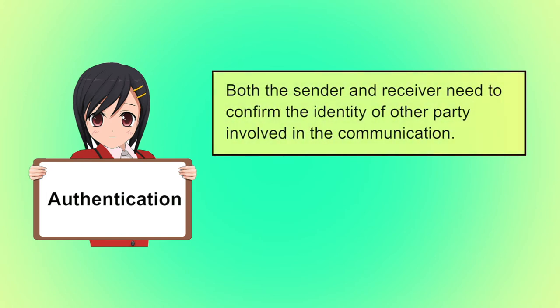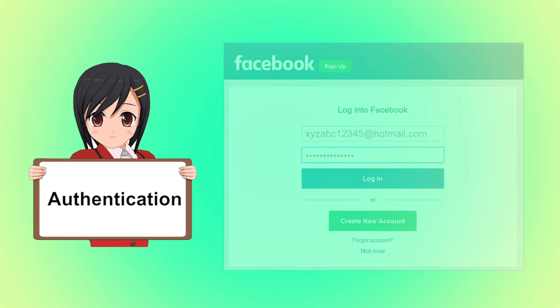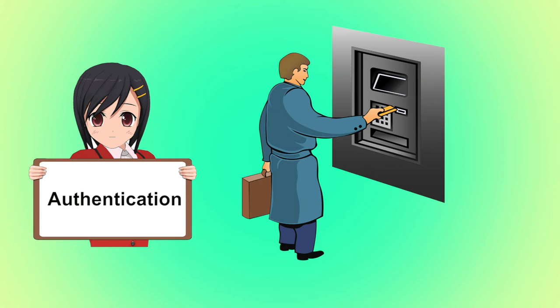Authentication is the process of verifying that the identified user is the real owner of his or her identity. For example, to access your Facebook account, you should enter a valid ID and password. Your ID and password proves your authenticity. Another example: after swiping an ATM card, the user is supposed to enter his secret PIN. Once it is entered, the user is authenticated to perform the desired transaction.